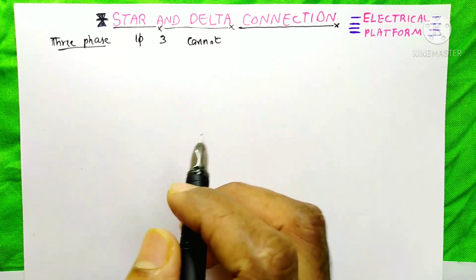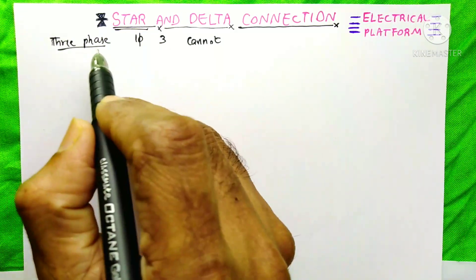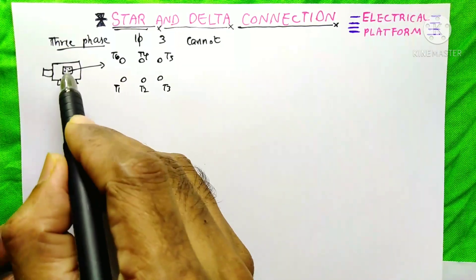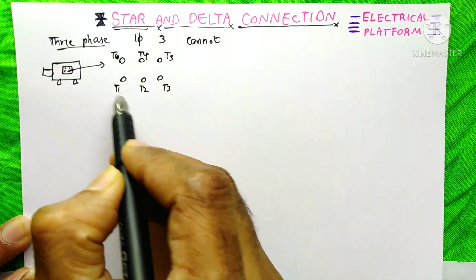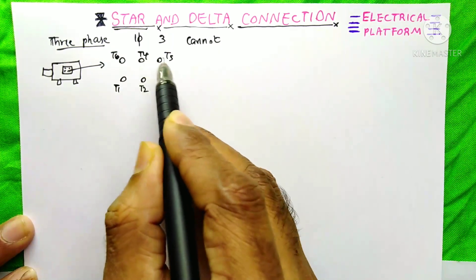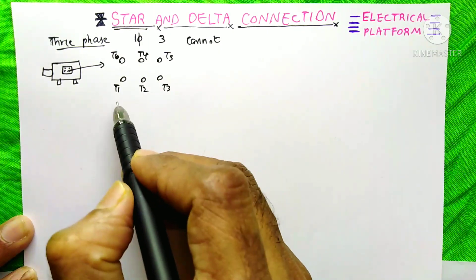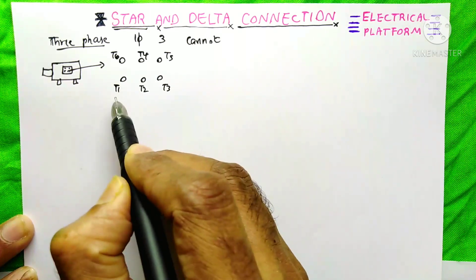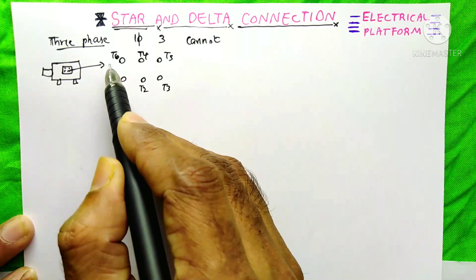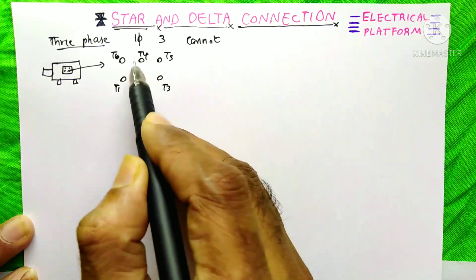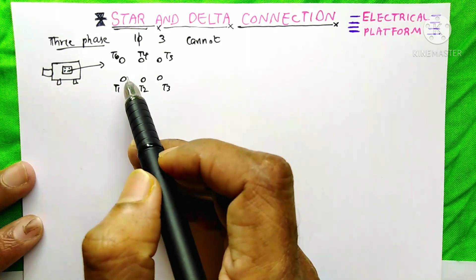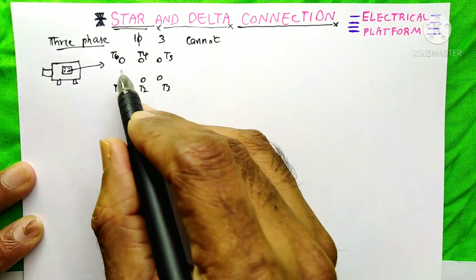If you want to get deep information about star and delta, please stay on this channel till the end of this video without skipping. It is a three-phase motor and this is its terminal box. The terminals are given as T1, T2, T3, T4, T5, T6. You may wonder that T1, T2, T3 are in sequence from the left, but T4 starts from the middle. This arrangement is to make the delta connection symbol, which I will explain later.